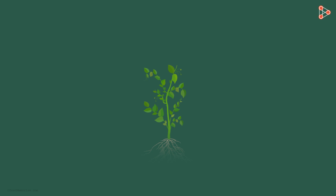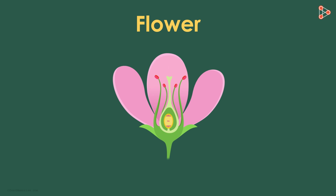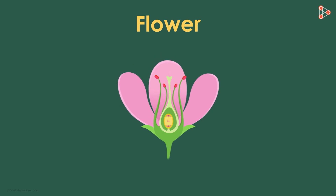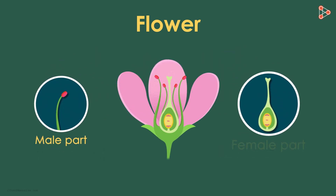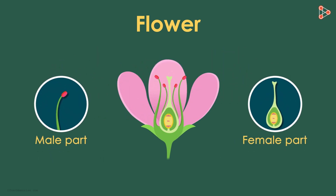By now, we know how sexual reproduction in plants takes place. This is what we have learnt. The flower, which is the reproductive organ of the plant, bears the male and the female parts. The male part, the stamen, contains the male gamete, while the female part, the pistil, has the female gamete.